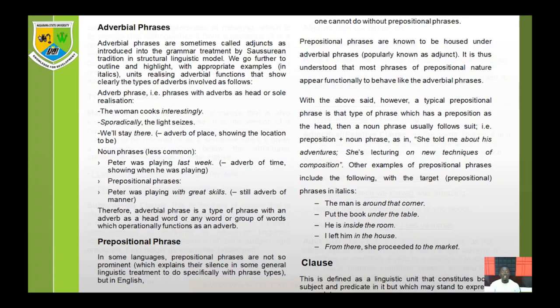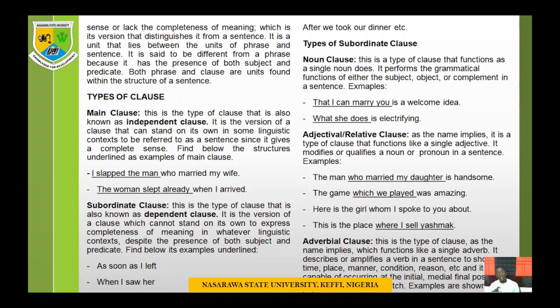In all the examples we have given of noun, verb, adverbial, and prepositional phrases, you discover they do not convey completeness of meaning, they do not express complete sense, and they do not have both subject and predicate — and that is why we call them phrases. The next topic is the clause. A clause is a linguistic unit that contains both subject and predicate, but which may or may not express complete sense — and that is what distinguishes it from a sentence.